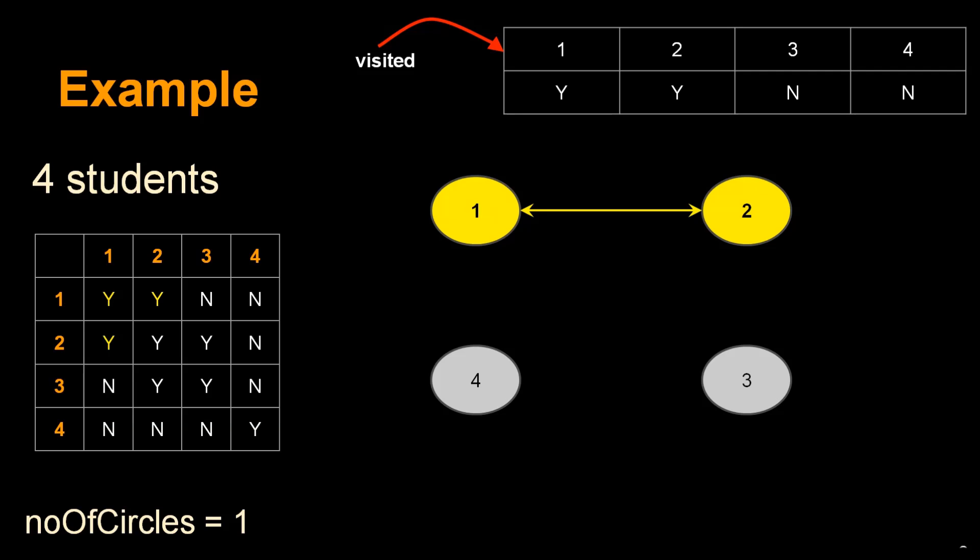The first step is to find all friends of student 1 by checking all Y entries in row 1. Ignoring the first column where the student is friends with themselves, we see the second column of row 1 is Y, meaning students 1 and 2 are friends. Mark visited[2]=Y and connect nodes 1 and 2.